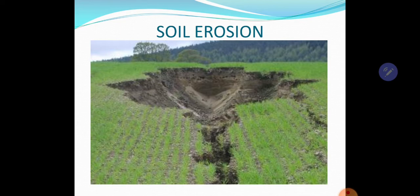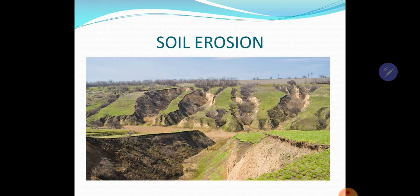Normally there are two agents that erode the soil. One is wind, that is moving air, and the other is flowing water. Because of that, agricultural production decreases. It is therefore extremely necessary to maintain this upper layer for agriculture. So there are some measures to prevent soil erosion.